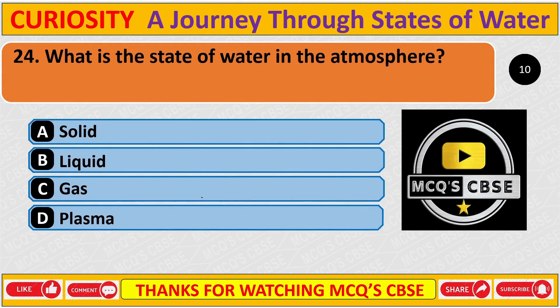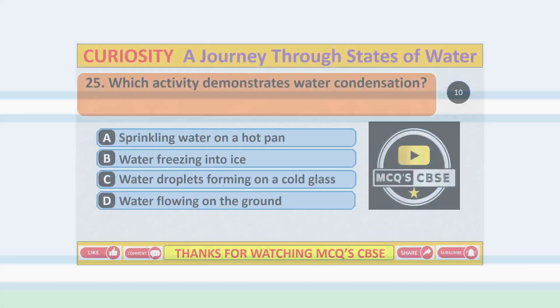What is the state of water in the atmosphere? The correct answer is C: Gas.